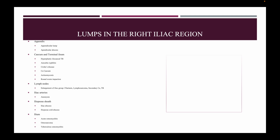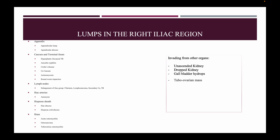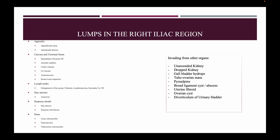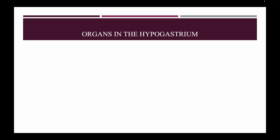Similarly, in the right iliac region there may be other lumps invading from other organs such as: undescended kidney, dropped kidney, gallbladder hydrops, tubo-ovarian mass, piosalpinx, broad ligament cysts or abscess, uterine fibroid, ovarian cyst, diverticulum of urinary bladder, undescended retained testis, and pelvic abscess.